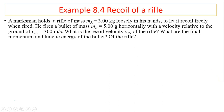Let's take a look at this example. A marksman holds a rifle of mass 3 kilograms loosely in his hand and lets it recoil freely when fired. He fires a bullet of 5 grams horizontally with a velocity relative to the ground of 300 meters per second. The questions are: what is the recoil velocity of the rifle? What are the final momentum and kinetic energy of the bullet? And what are the final momentum and kinetic energy of the rifle?